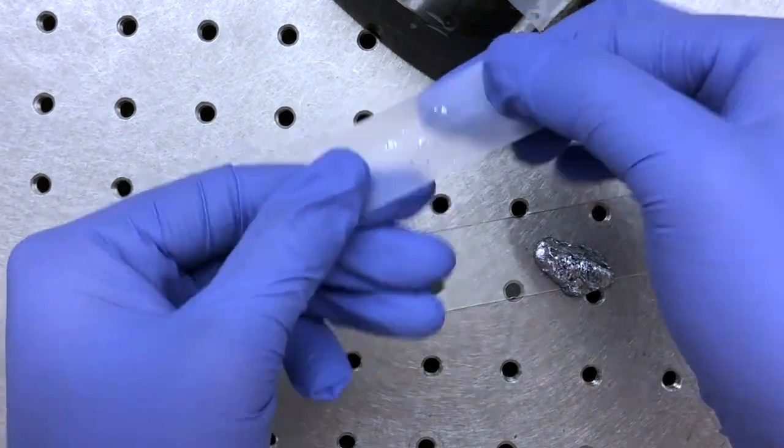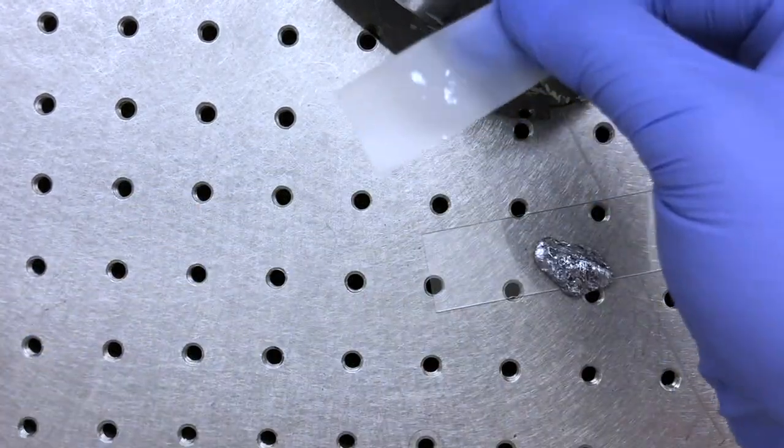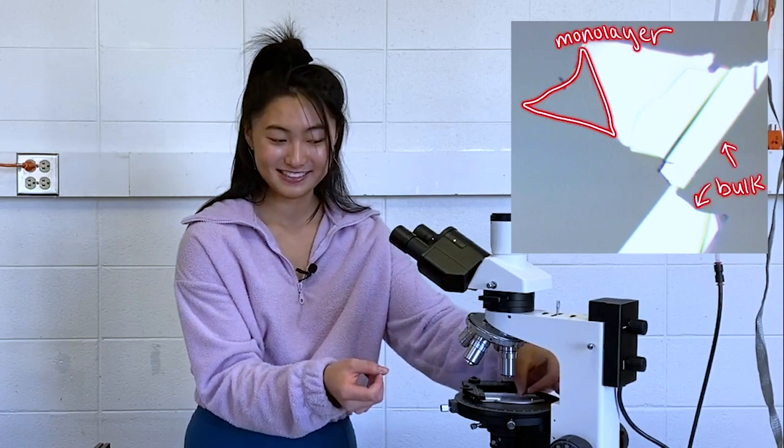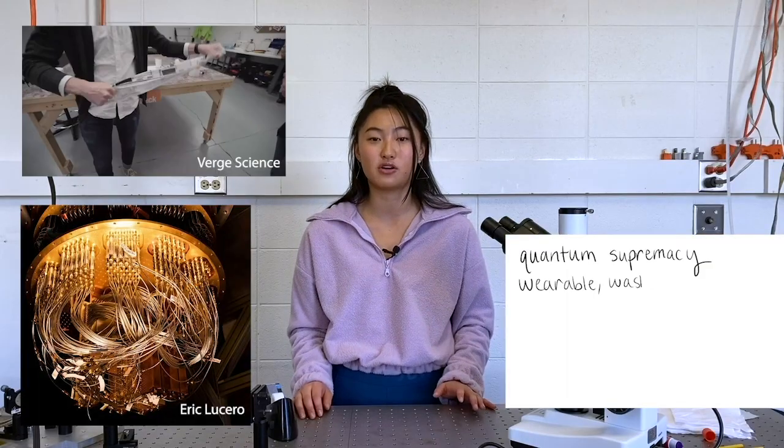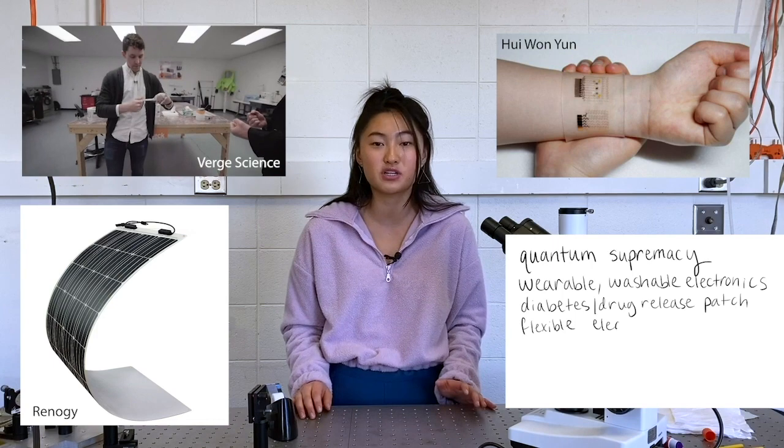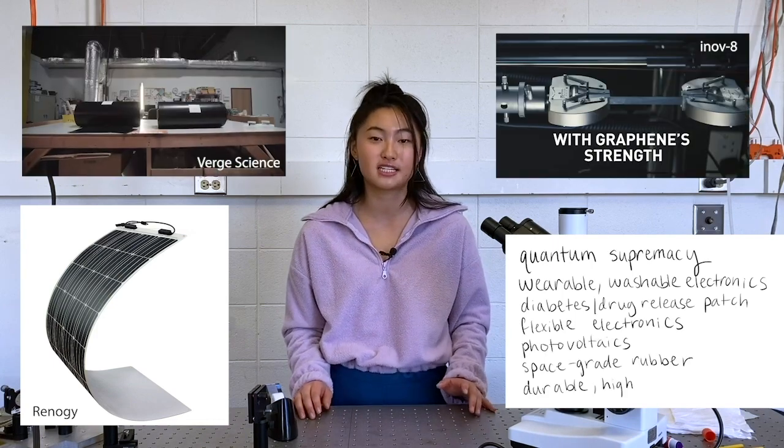Though monolayers are difficult to see with the bare eye, you can actually see them under a microscope. 2D materials are being incorporated in clothing, rocket ships, sports equipment because of their strength, conductivity, flexibility and transparency. I invite you to grab a roll of scotch tape and start changing the world.